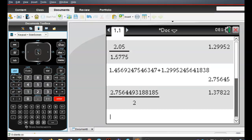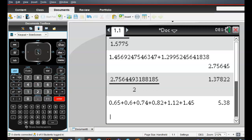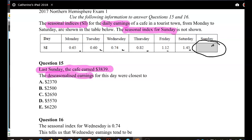So I'll go to my calculator. I might add them all up and then take them away from seven at the end. So 0.65 plus 0.6 plus 0.74 plus 0.82 plus 1.12 plus 1.45. Then 7 minus our answer, 1.62. So that means that for Sunday, that seasonal index is 1.62.